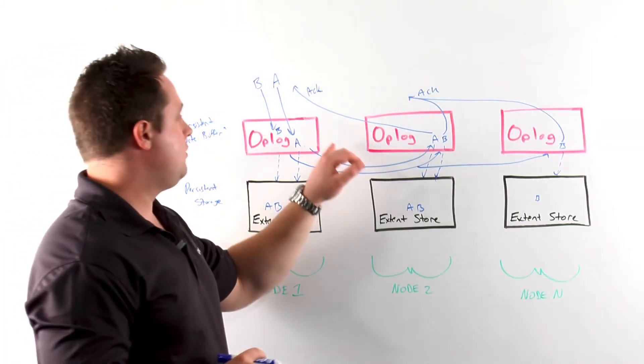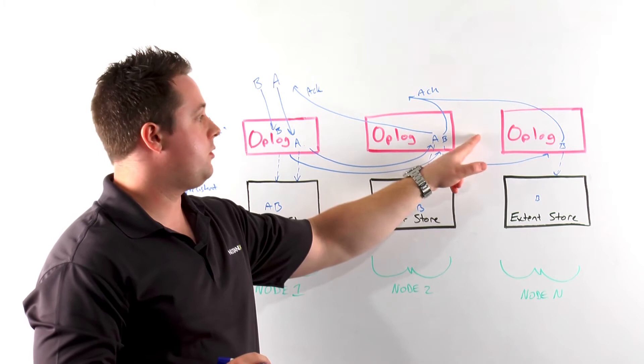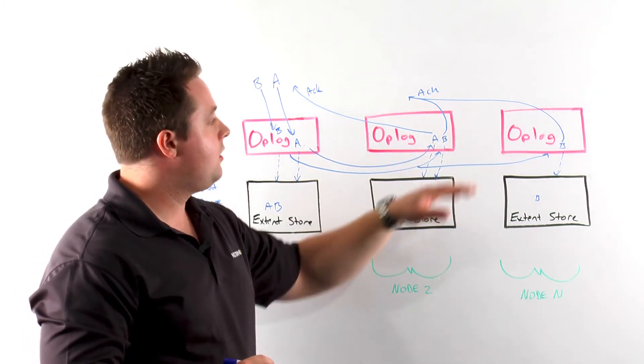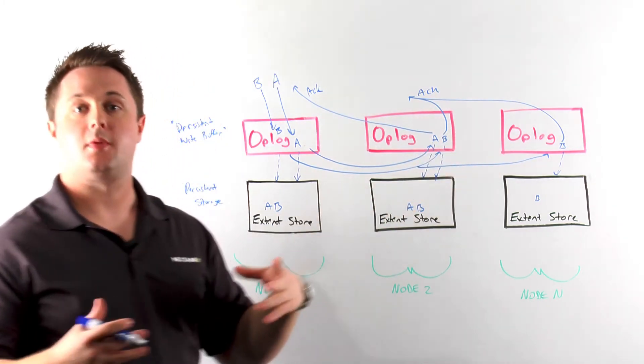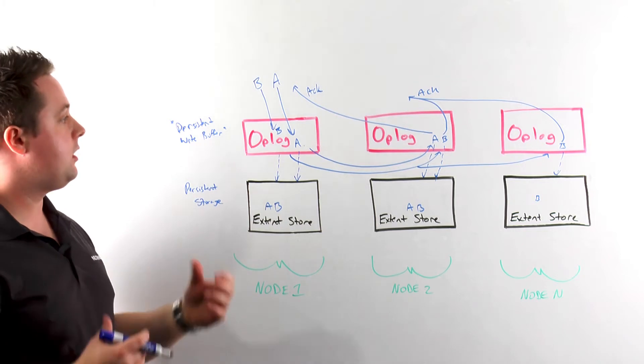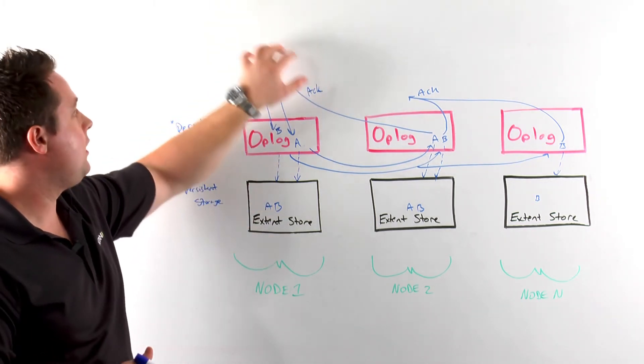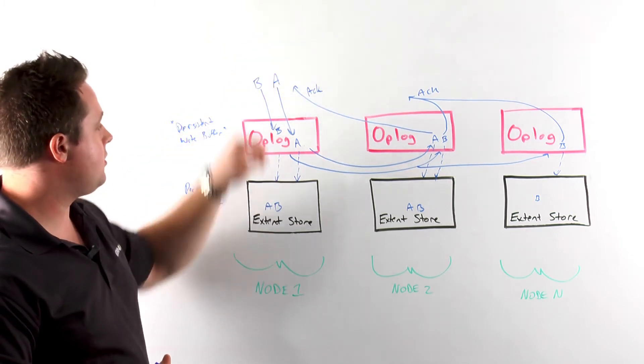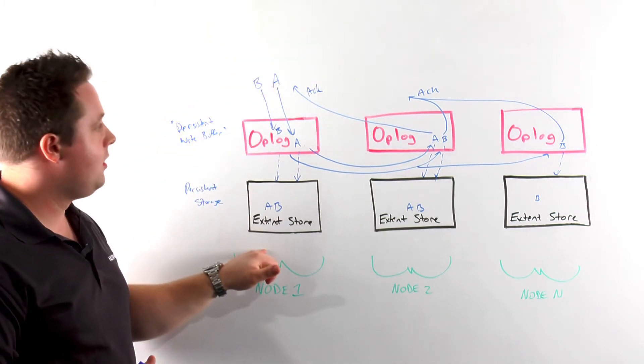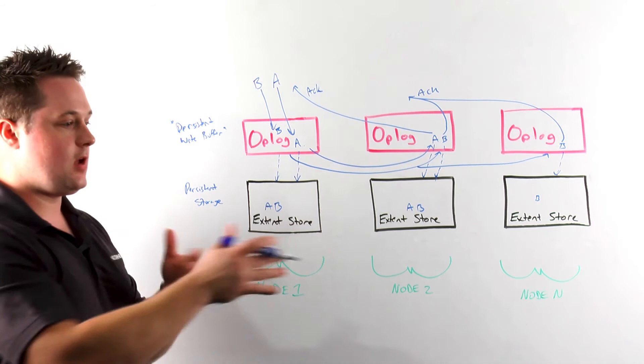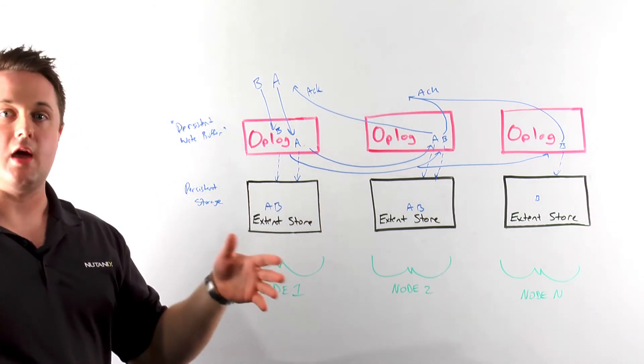One of the key things to highlight here is during the synchronous replication for the data protection in the op-log, all nodes within the cluster participate. There is no mirroring, there is no pairing, or anything like that. So if I were to have an eight-node cluster and write seven chunks of data here to this node one, all other of the seven nodes would actually handle one of those remote replications.